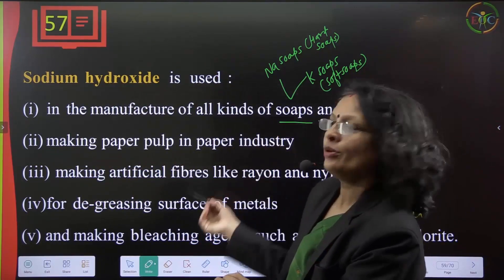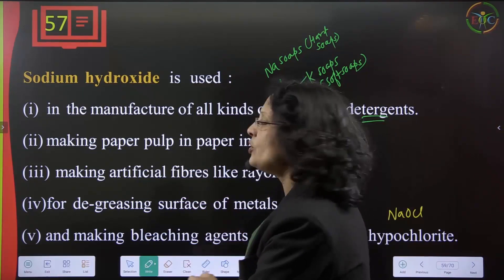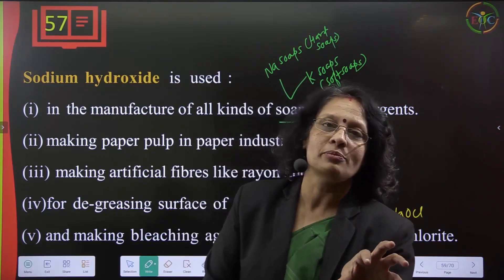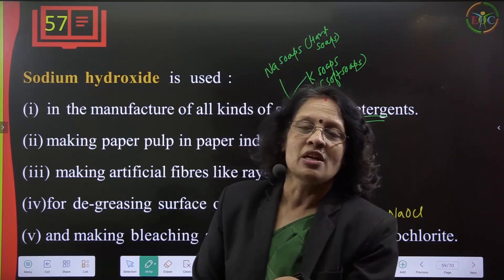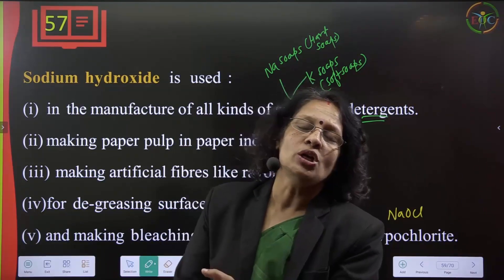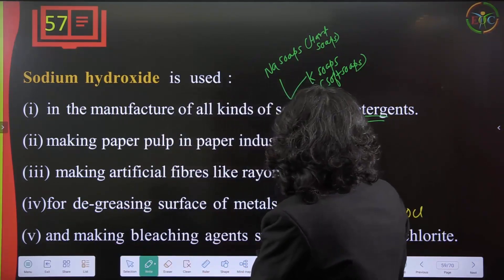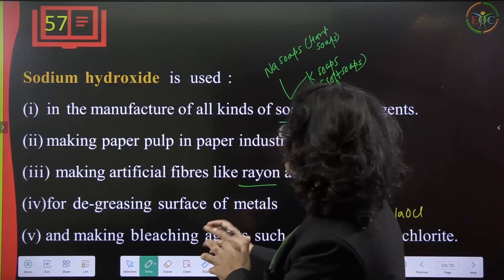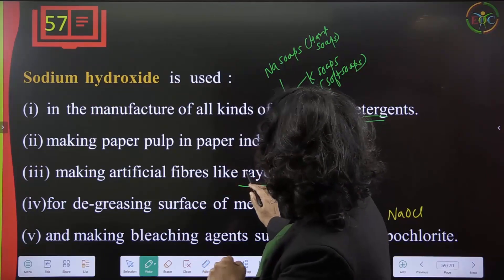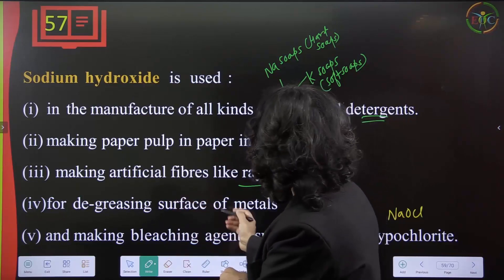Sodium hydroxide is used for making paper pulp in the paper industry, and for making artificial fibers like rayon. Rayon is a semi-synthetic fiber — natural fiber (cellulose) from plant material is treated with sodium hydroxide in the lab to convert it into rayon. Nylon is totally synthetic, while rayon is semi-synthetic.